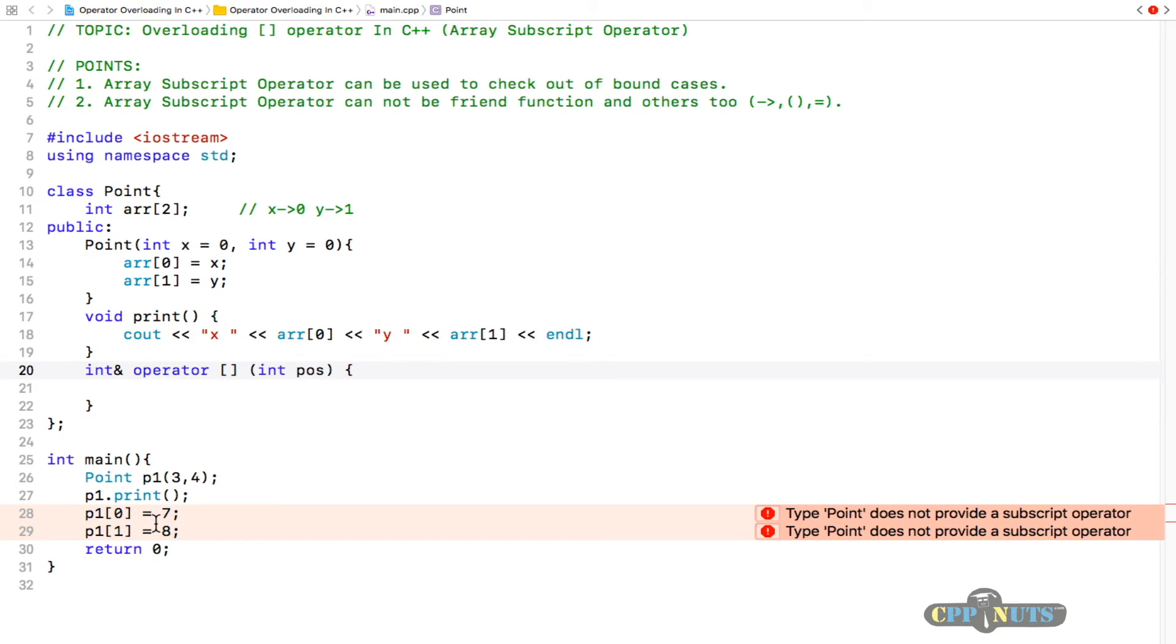The point is you will be returning the reference value here so that someone can change that by assigning it with some other value. If you're not returning the reference, you will be returning some temporary object or value, and if you are updating that, your original object will not update.